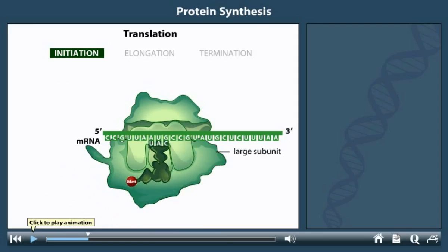The large subunit of the ribosome joins the complex. The ribosome contains three sites for tRNAs. The A, or amino acid site, accepts new tRNAs bearing amino acids. The P, or polypeptide site, is where a tRNA adds its amino acids to the growing polypeptide chain. The E, or exit site, is where the tRNA resides before exiting the ribosome.